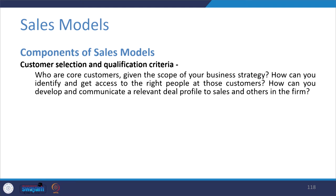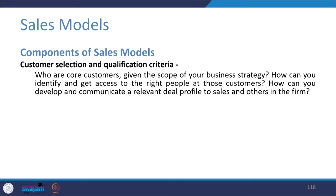The components of a sales model start with customer selection and qualification criteria — identifying who your core customers are given your business strategy, and how you can get access to the right people at those customers. In B2B businesses, you are not selling to one person but to a whole organization with different decision makers. In some cases, representatives from finance, HR, and supply chain or purchasing will all sit together for a sales call, listen to the presentation, discuss among themselves, and then make a decision.